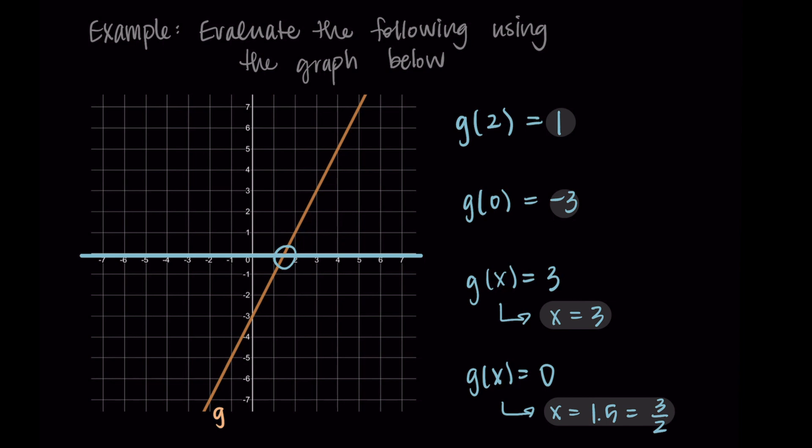I want to make this connection to the intercepts one more time before we finish. You'll see that g(0) = -3. This is our vertical intercept. It had an input of 0 and an output of -3, and the -3 was the vertical intercept. So the input of 0 is what helps us find that vertical intercept. And for the horizontal intercept, this is when the output is 0. This was that x = 1.5 as the input had 0 as an output. Input of 0 is vertical intercept, output of 0 is horizontal intercept.